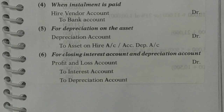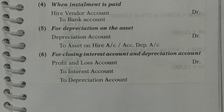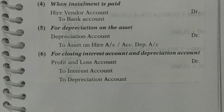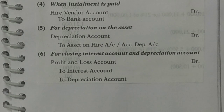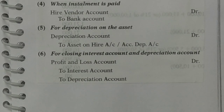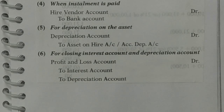Then, while passing the entry for depreciation, you simply need to record the expense. Depreciation is an expense, so you will write: depreciation debited. And whose value is it reducing? Our asset's value. So: to asset on hire purchase — or whatever the name of the asset is, to machinery, to plant, to truck. When an asset's value increases we debit it; when it decreases we credit it.